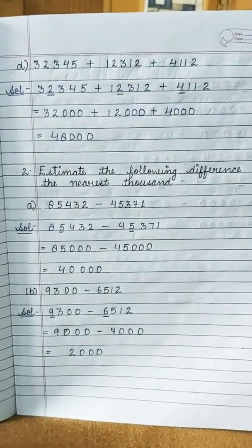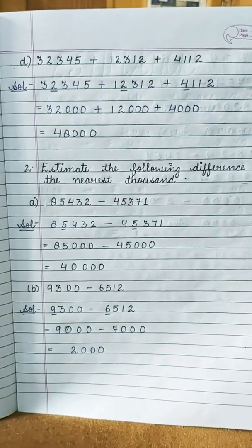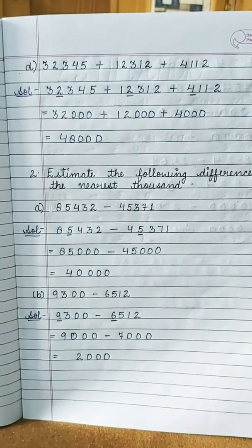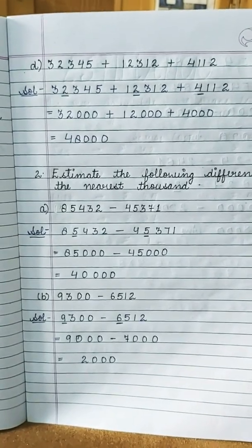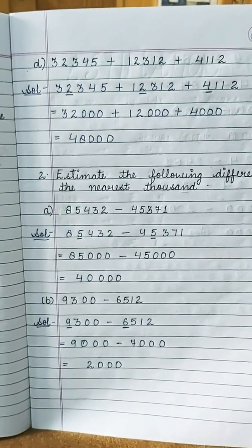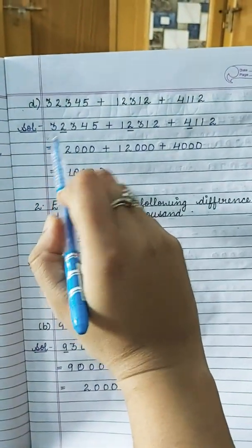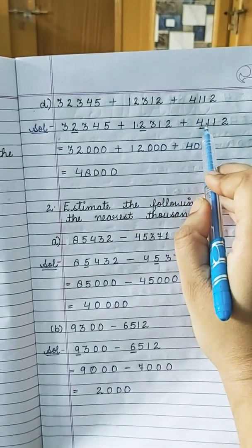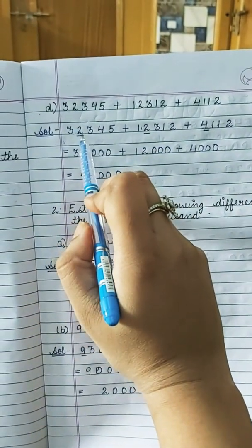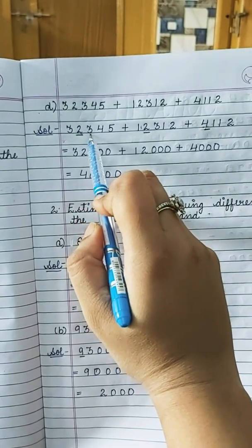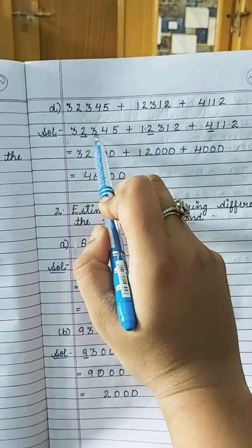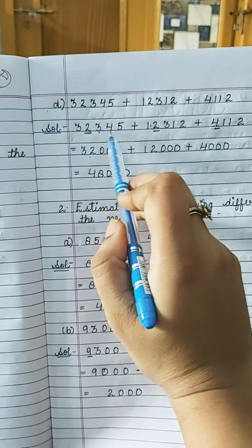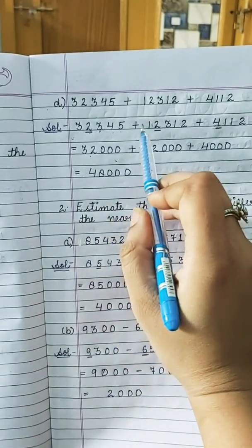Part D is 32345 plus 12312 plus 4112. Underline the digit at the thousands place. For 32345, I have underlined 2; the digit after it is 3, which is less than 5, so 2 remains and 32345 becomes 32000. For 12312, I have underlined 2; observe 3 — less than 5 — so 2 remains and the rest become 0.